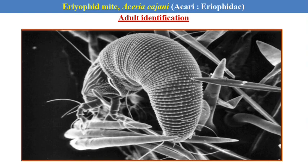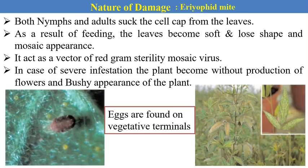The next is the eriophyte mite, Aceria cajani. This is a non-insect pest as it does not come under the class Hexapoda or class Insecta — they do not have three pairs of legs — but it is a major pest of tur or red gram. It is also a sucking pest with three life stages: egg, nymphs and adult. Egg laying takes place on the vegetative terminals, and after hatching, both nymphs and adults are the damaging stages. Both nymphs and adults suck cell sap from the leaves, causing the leaves to become soft and lose their shape and appear mosaic. Additionally, the eriophyte mite acts as a vector for red gram sterility mosaic virus.